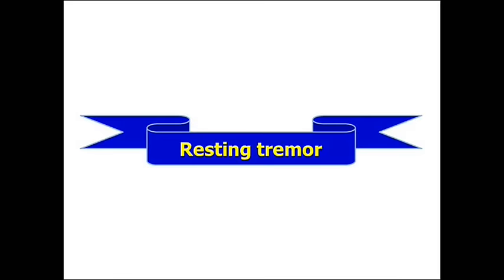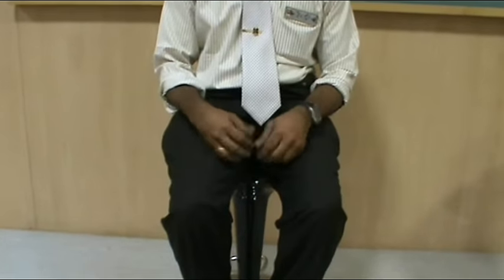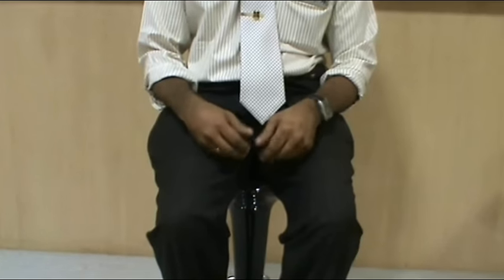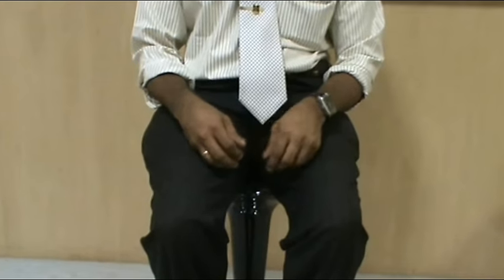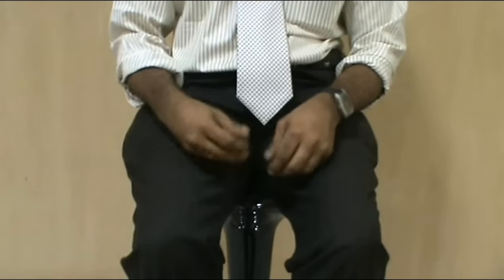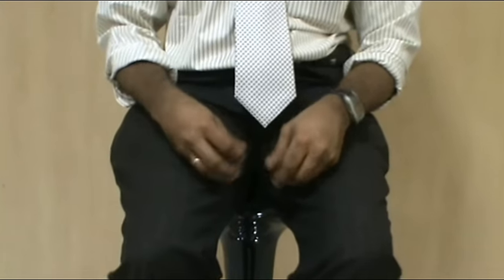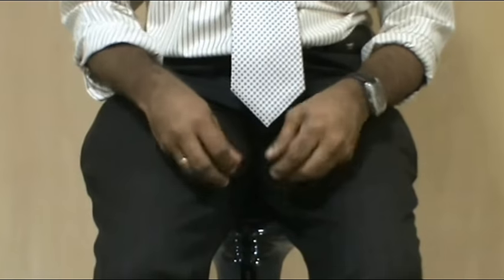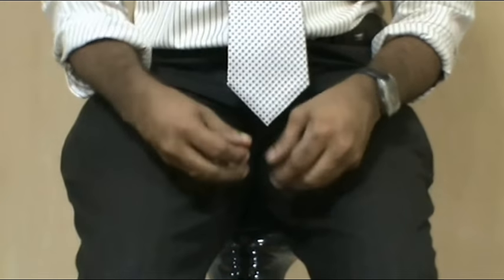Resting tremor consists of rapid involuntary movements of agonist and antagonist. In the following video you are about to see a patient with Parkinson's disease with tremor in his both upper extremities.